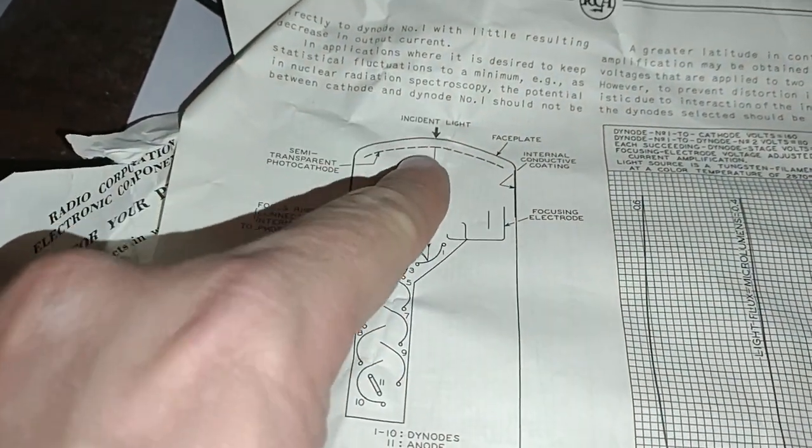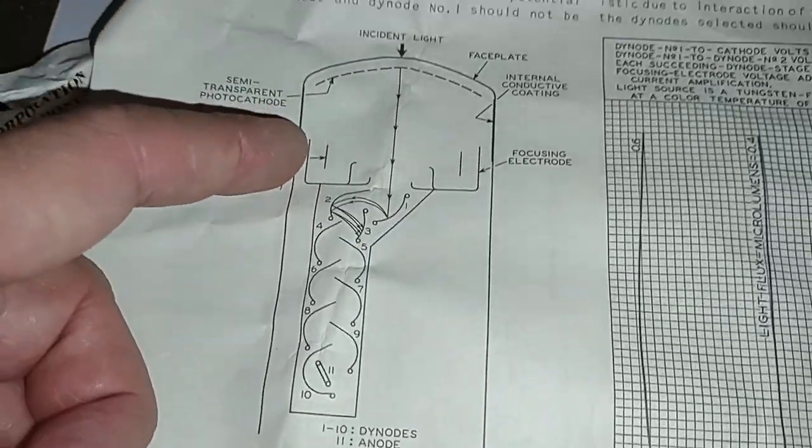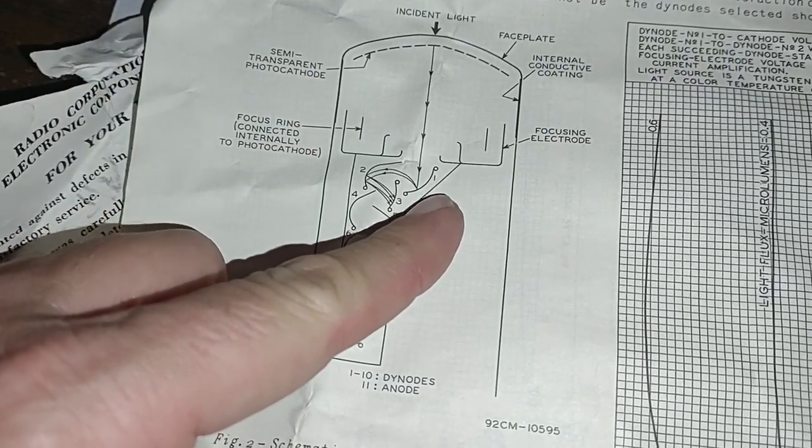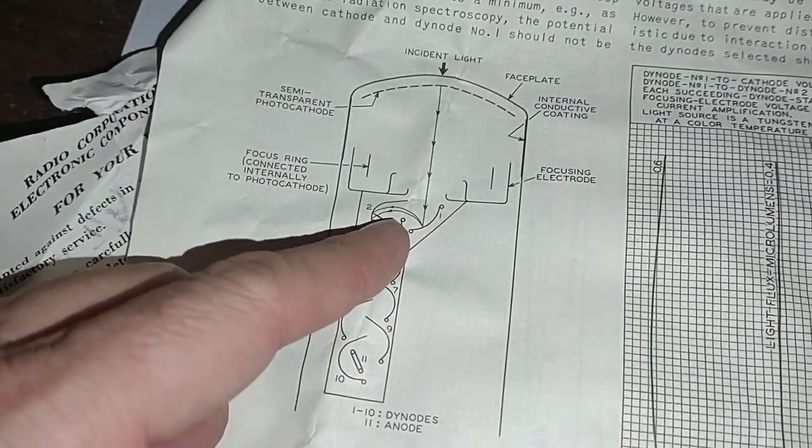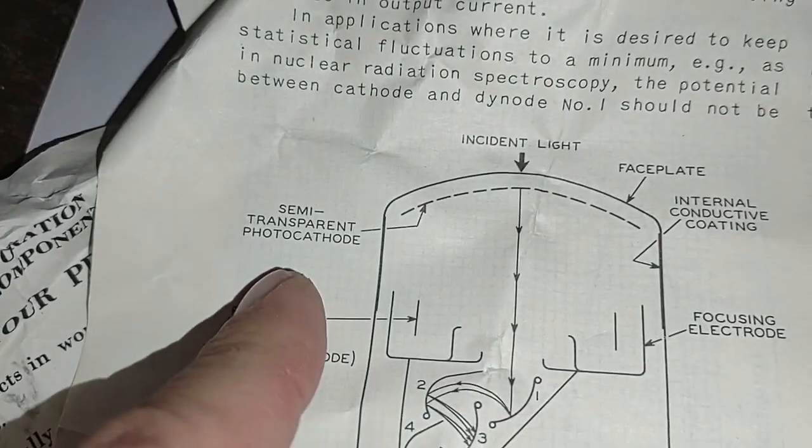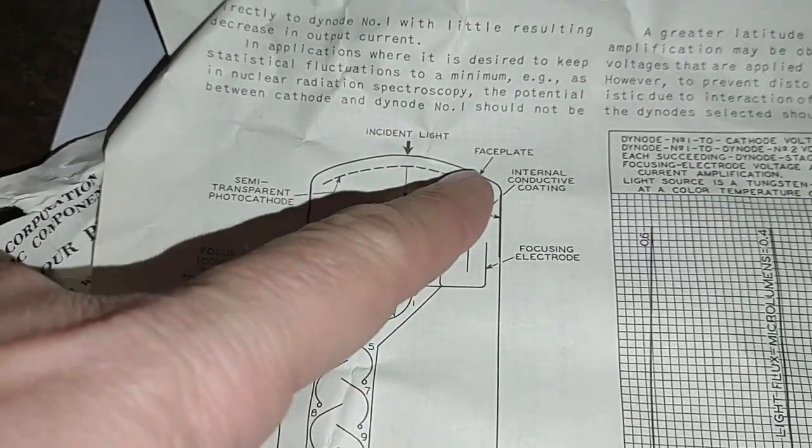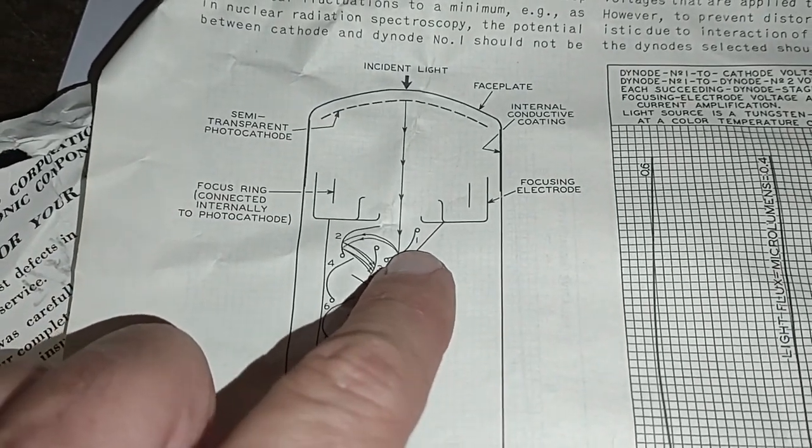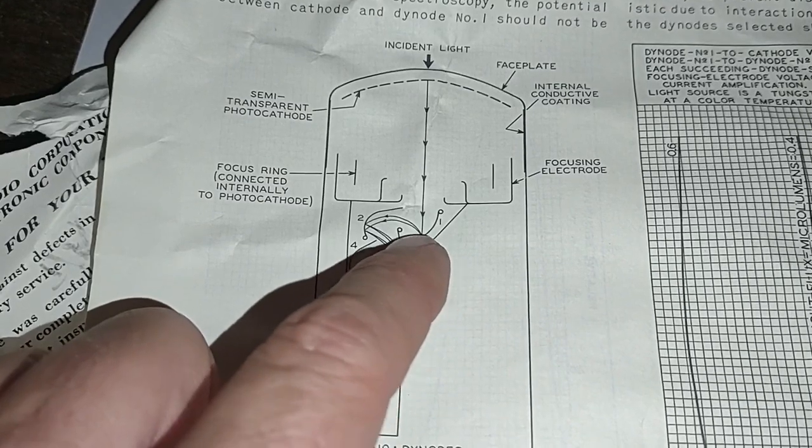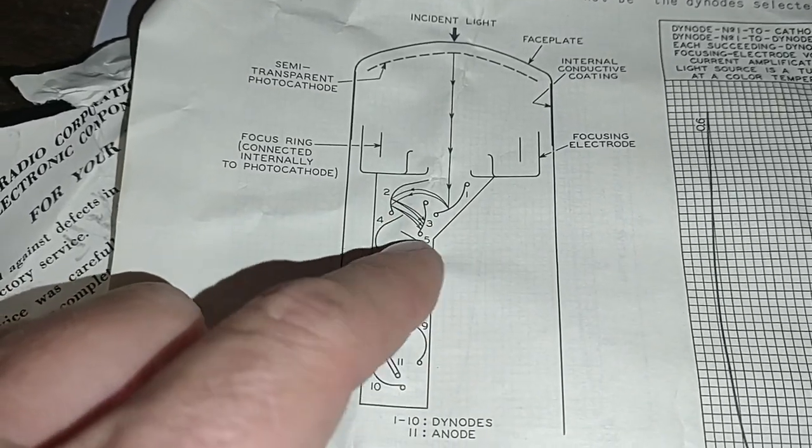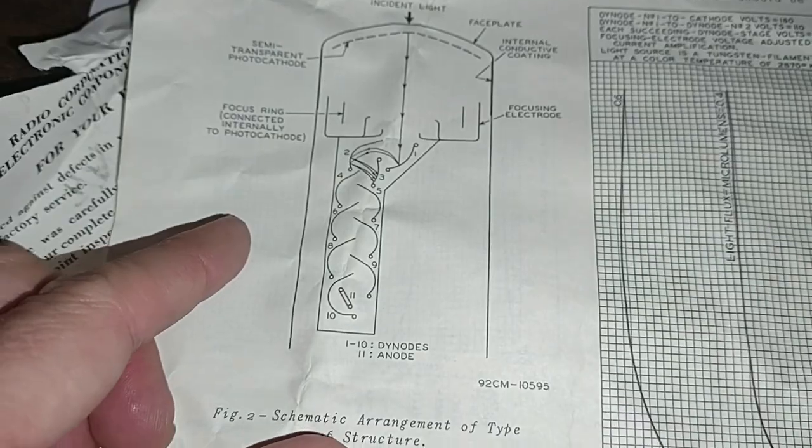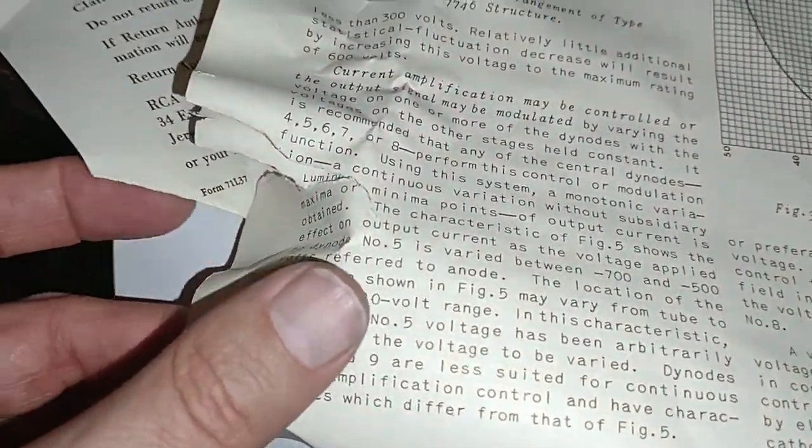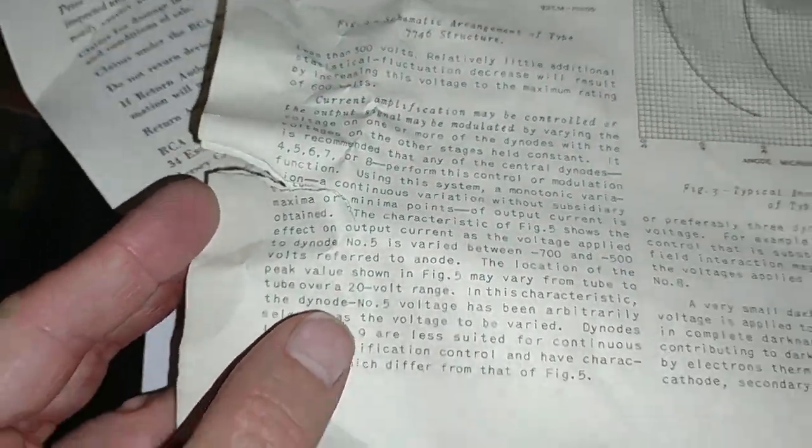The light comes in through here and then it'll knock off an electron on the photocathode. The photocathode is up here, so it knocks an electron off when a photon comes in, then it hits the first dynode and the current's amplified. Second dynode, third, fourth, on down the chain. Very cool. So there's the theory of how this guy works.